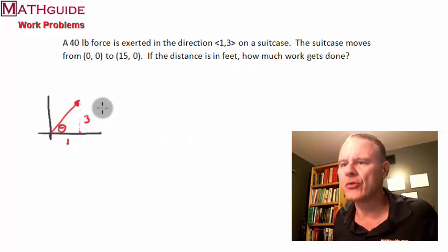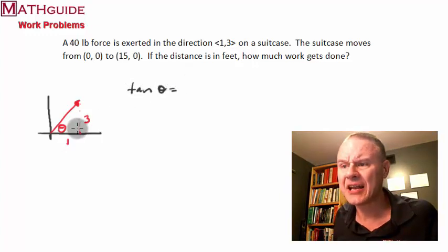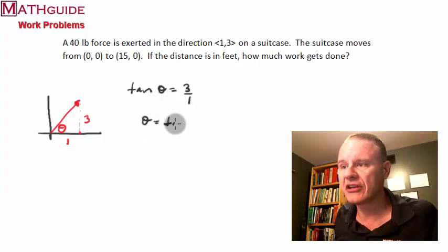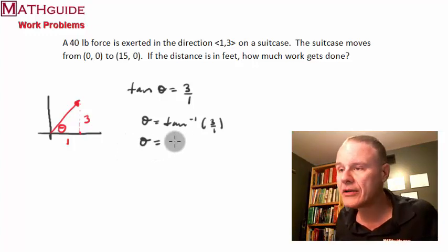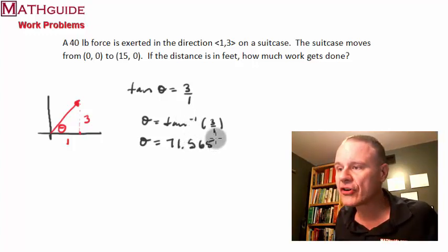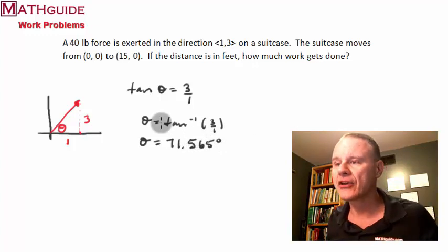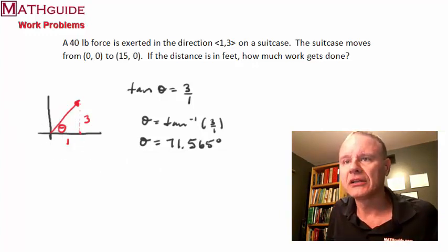The first thing we need to do is figure out what this angle is. Using trigonometry, the tangent of the angle equals opposite over adjacent. Taking the inverse tangent gives us 71.565 degrees — just make sure your calculator is in degrees. Now we have the angle.